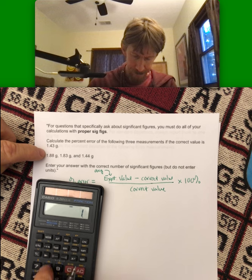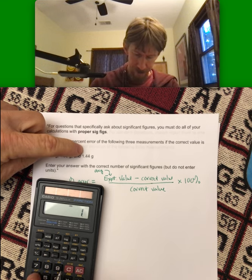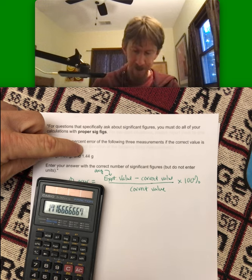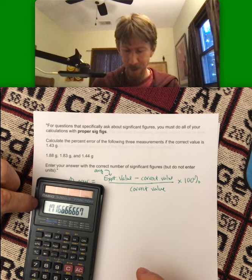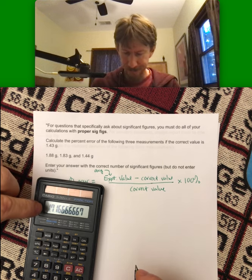So 1.88 plus 1.83 plus 1.44, I get 5.15. Divide that by 3, I get 1.716666. But since I have three sig figs here and I'm doing sig figs carefully, I'm going to keep 1.72 as my average.